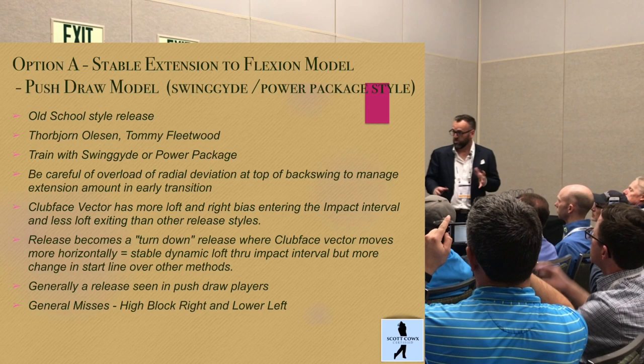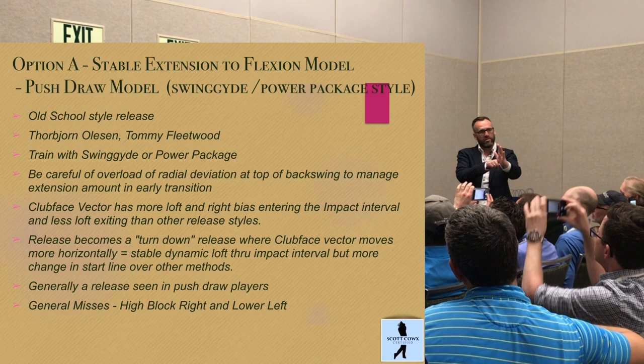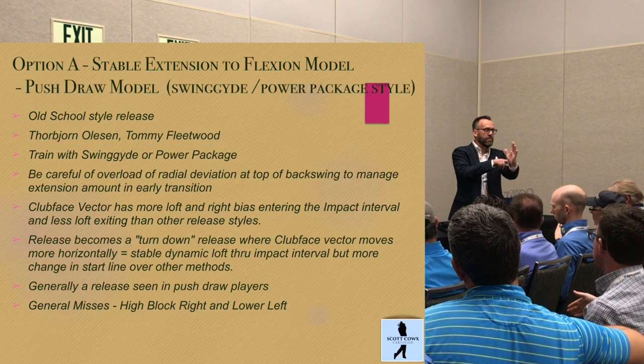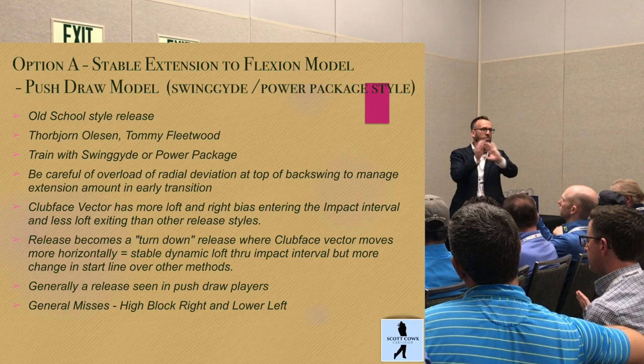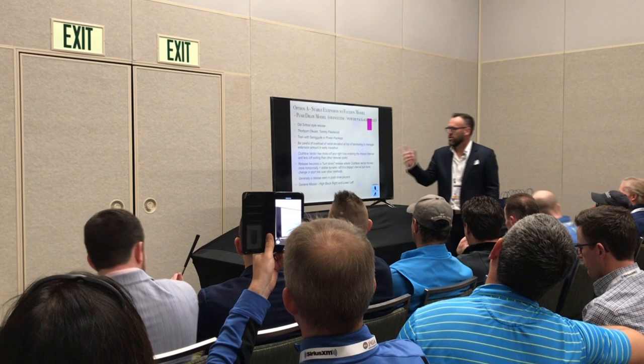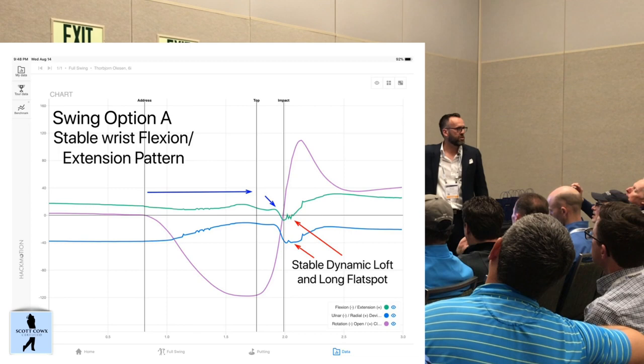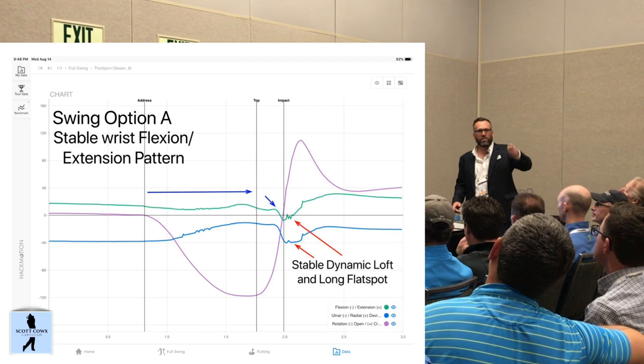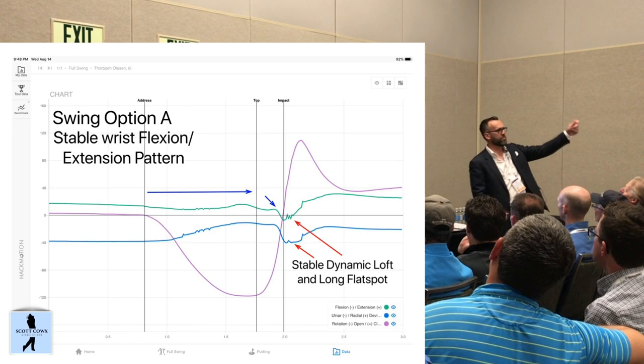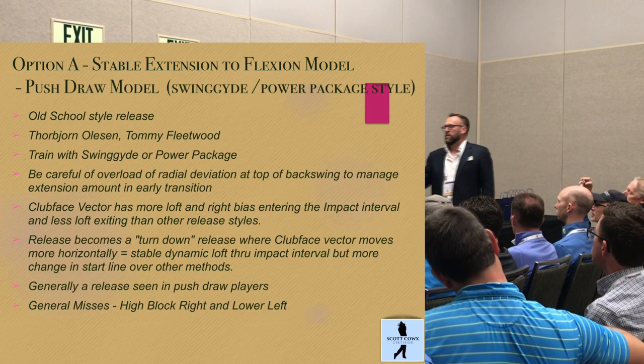So if you overload radial deviation, going back to that graph, in Thorbjorn's case you won't see a lot of radial deviation. Call this your Steve Stricker — a slightly under-loaded, constant-radius pattern. Not a lot of 'buggy whipping' in the radial plane. This is your Steve Stricker back-and-through kind of motion, where most of the speed is coming through rotation.